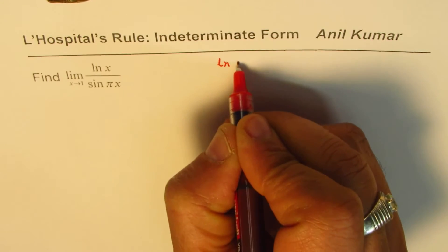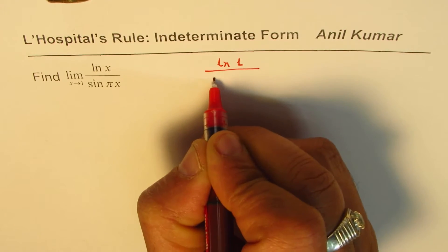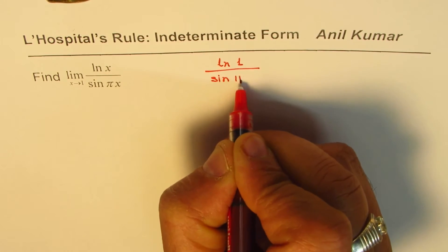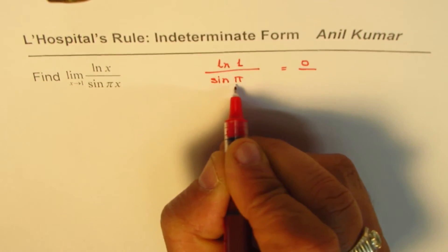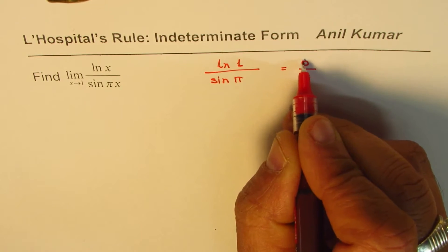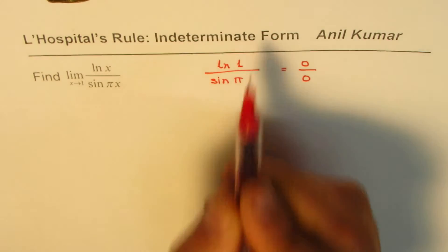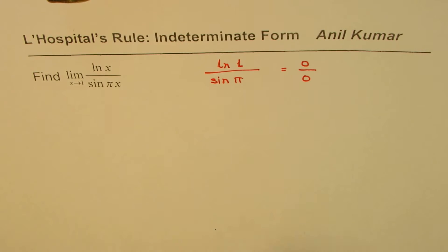If I substitute 1 for x, what do I get? ln 1 over sine π. ln 1 is 0 and sine π is also 0, so we have the form 0 over 0, which is the indeterminate form.